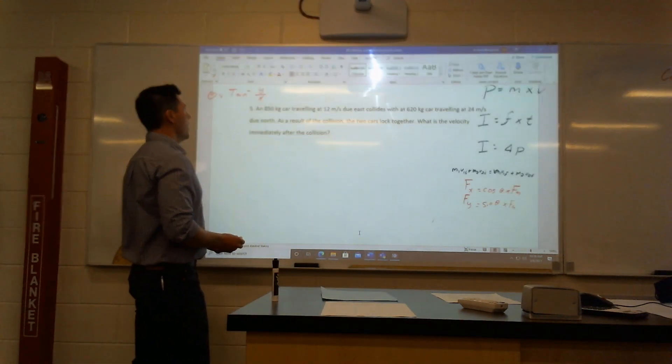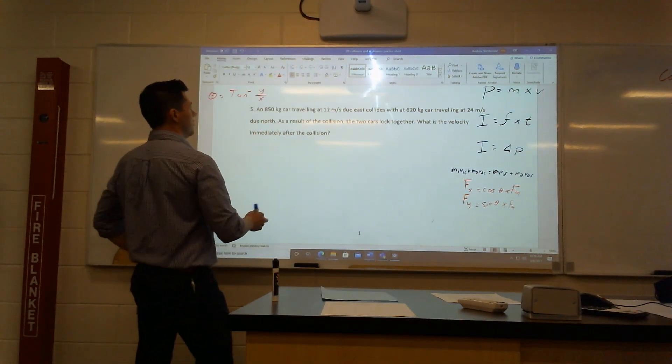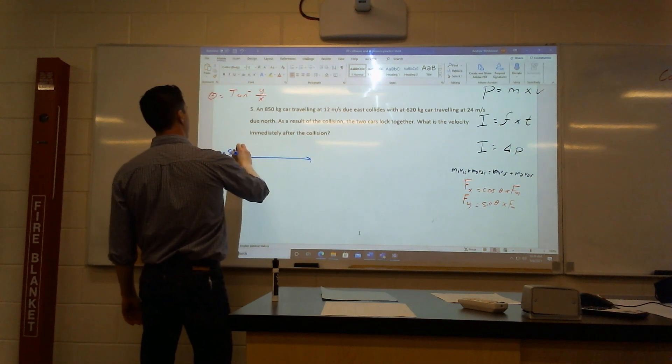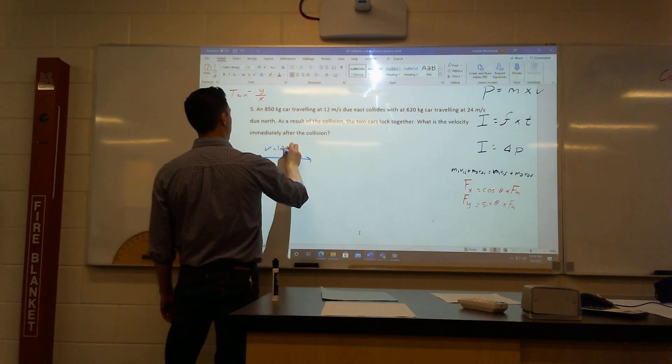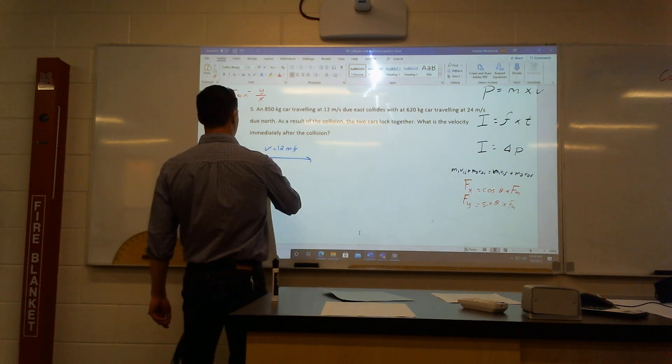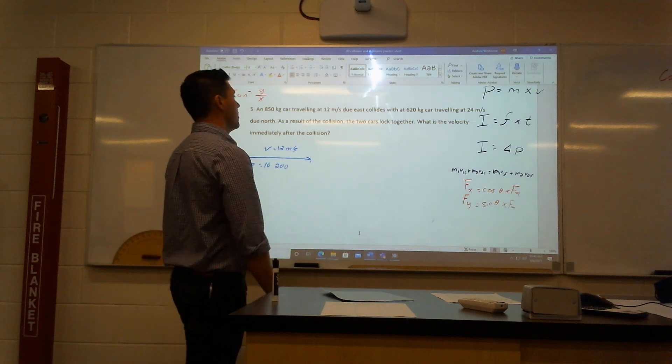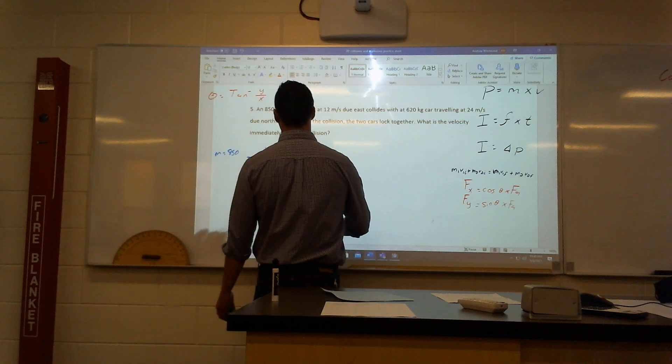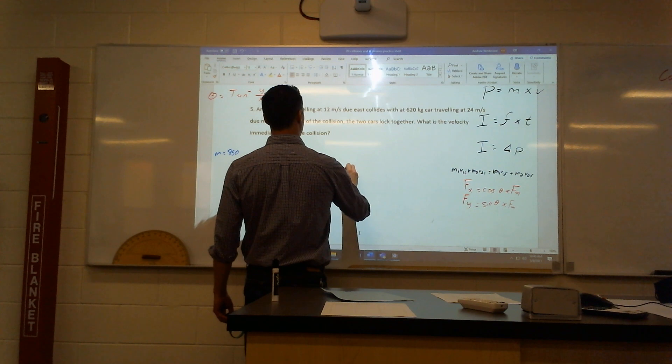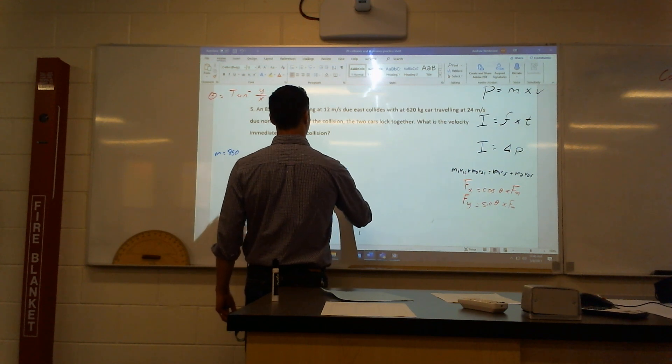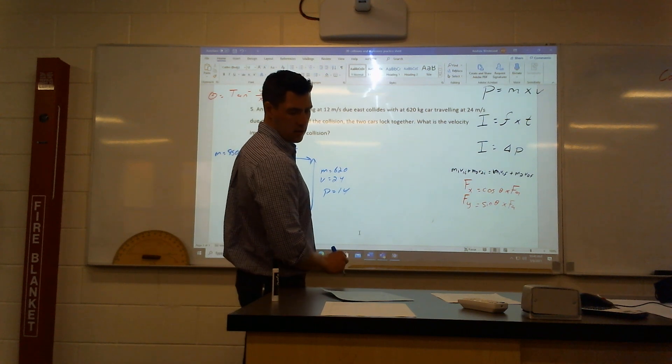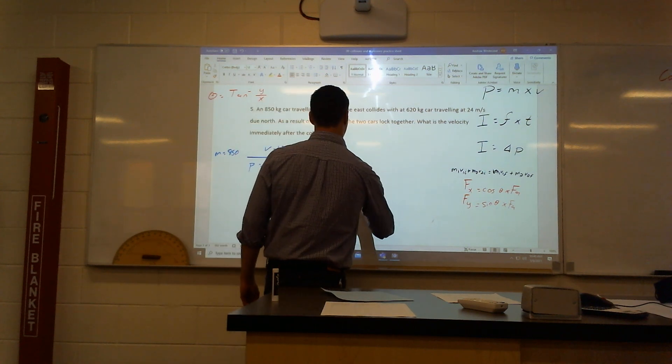It says an 850 kilogram car moving due east. So car mass 850, velocity 12 meters per second. We're going to have momentum of 10,200. It collides with another car going north with a mass of 620, velocity 24, which means we get a momentum of 14,880.